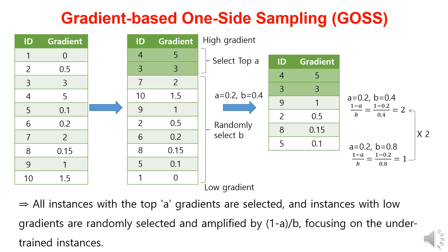Let's examine GOSS with an example. Suppose there are 10 instances. We sort them in descending order based on their gradients and set the hyperparameters A and B. GOSS selects all the top data with high gradient values and randomly selects the lower data. The value of A represents the proportion of the top part with large gradient values, and B represents the proportion of the bottom part with small gradient values. If A is set to 0.2 and B to 0.8, 20% of the top and 80% of the bottom are selected, meaning all data is selected without omission. On the other hand, if A is set to 0.2 and B to 0.4, 20% of the top with large gradient values is entirely selected, and only 40% of the bottom instances with small gradient values are randomly selected.